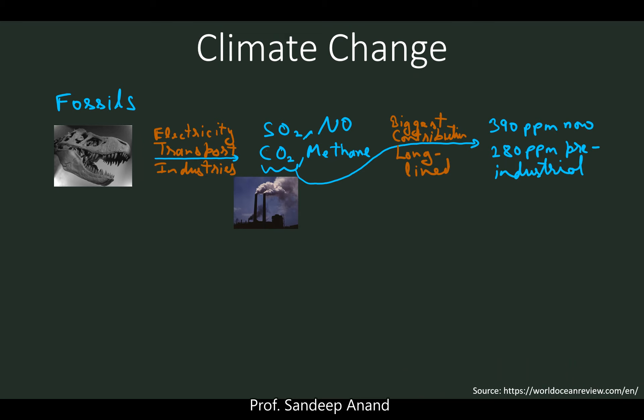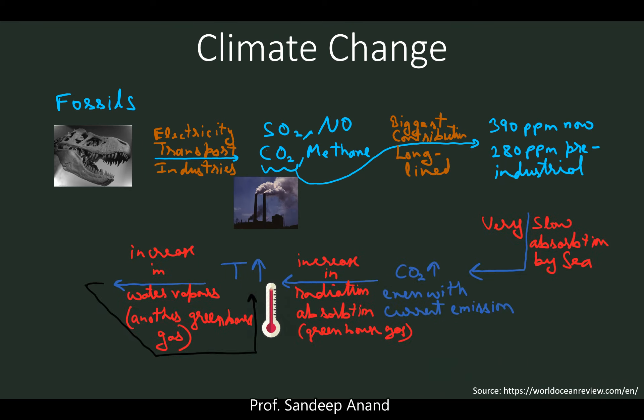CO2 contributes to climate change because it is very long-lived — it does not leave the environment quickly. It can be added very fast when fuel is burned, but removing it takes an enormous amount of time. Currently, CO2 concentration is about 390 parts per million, whereas in the pre-industrial era it was about 280 ppm. Industrialization, built predominantly on fossil fuels, has led to this significant increase.